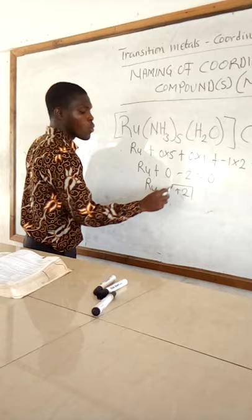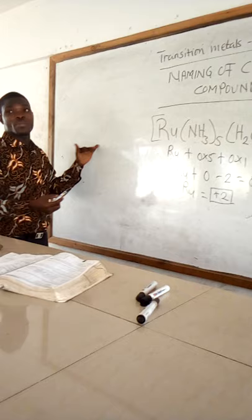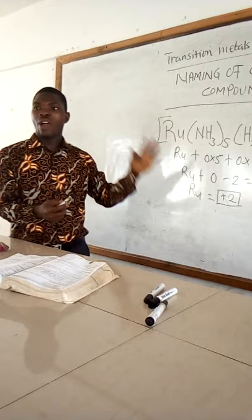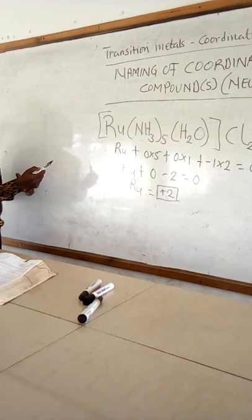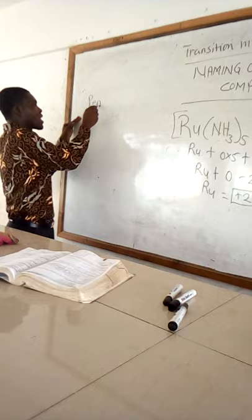We now know our oxidation number for the central atom. Then we go by the principle. The first principle states that we should write the coordination number as di-, tri-, and so forth. So we have 5 ligands bonding to the central atom plus 1 ligand bonding to the central atom.